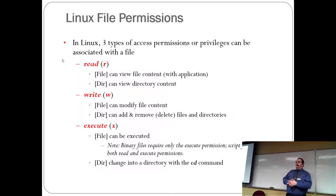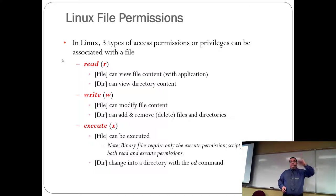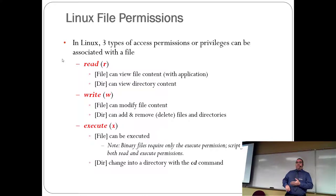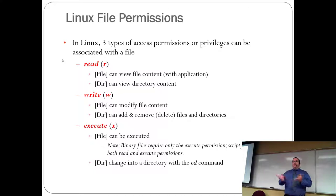Execute on a file means you can run it like a program. Back in the day when downloading Linux applications manually, files would come down without the execute bit turned on — the readme would tell you which files needed execute permissions. Execute on a directory means you're allowed to actually go into the directory. Without execute set on a directory, other people can't get into it — except root, which ignores permissions.